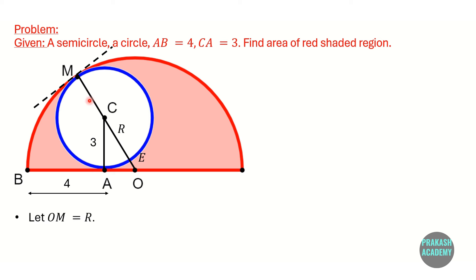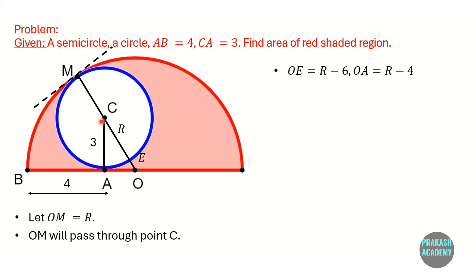OM is the radius of the semicircle, so OM equals OB, and both equal the radius of the semicircle — let us call it capital R. Since OM passes through point C, the total distance from O to M via C is R. The radius of the smaller circle is 3 units, so the distance OE equals R minus 6 units.